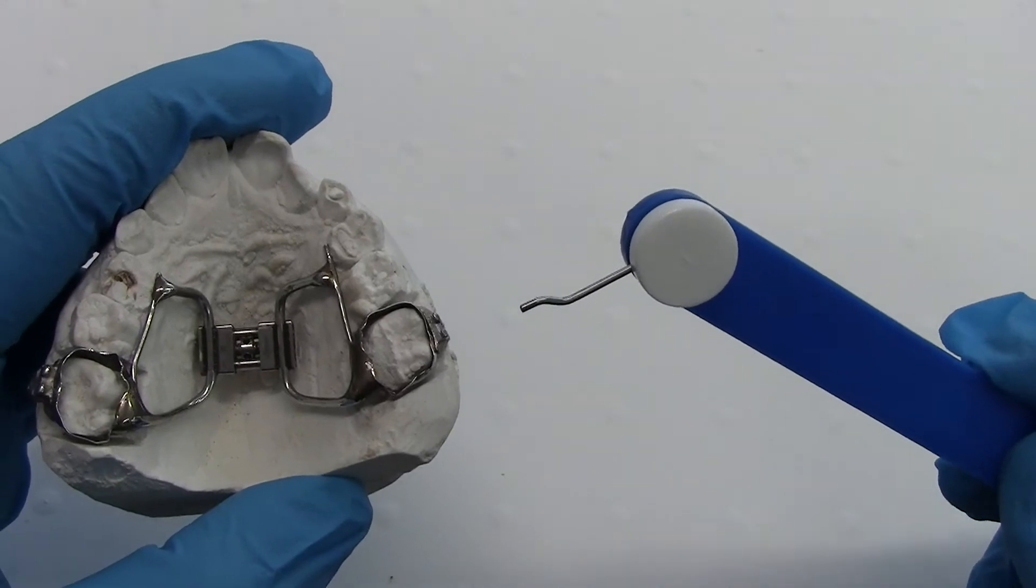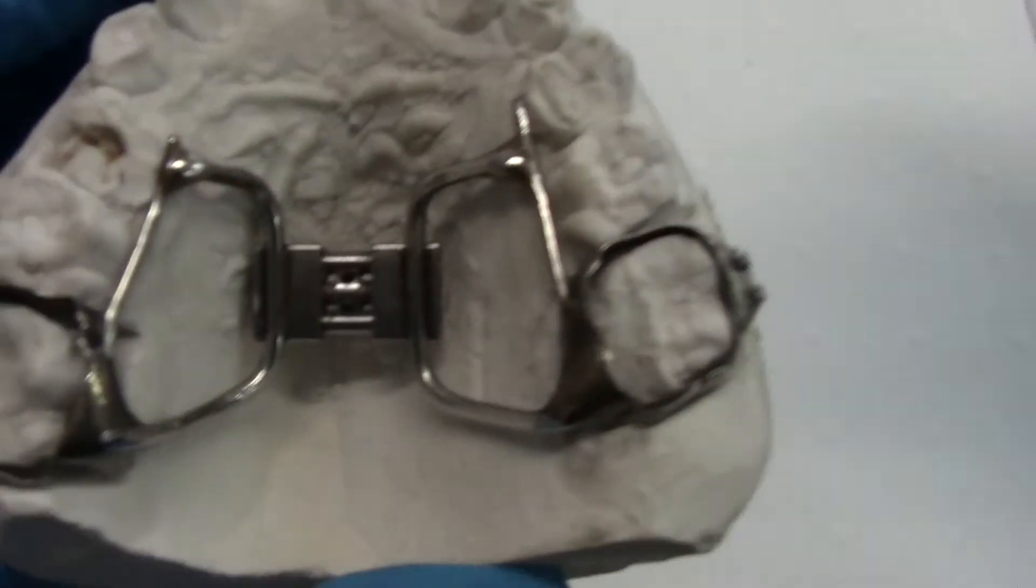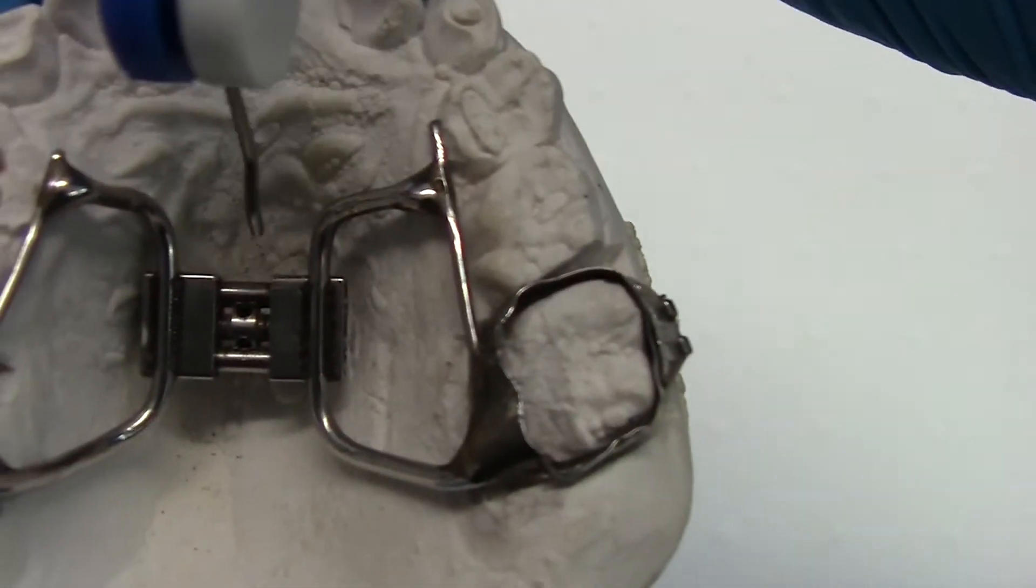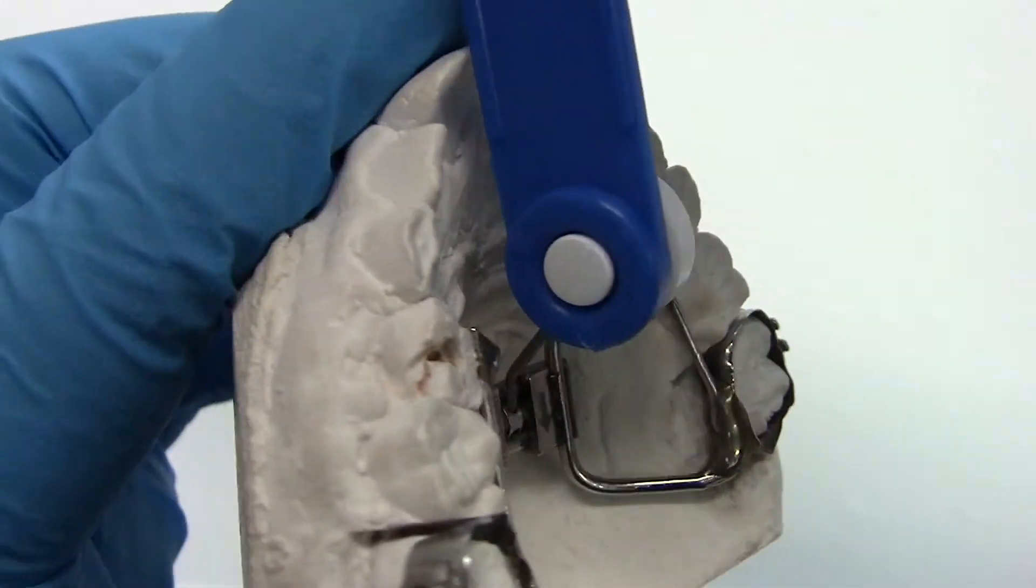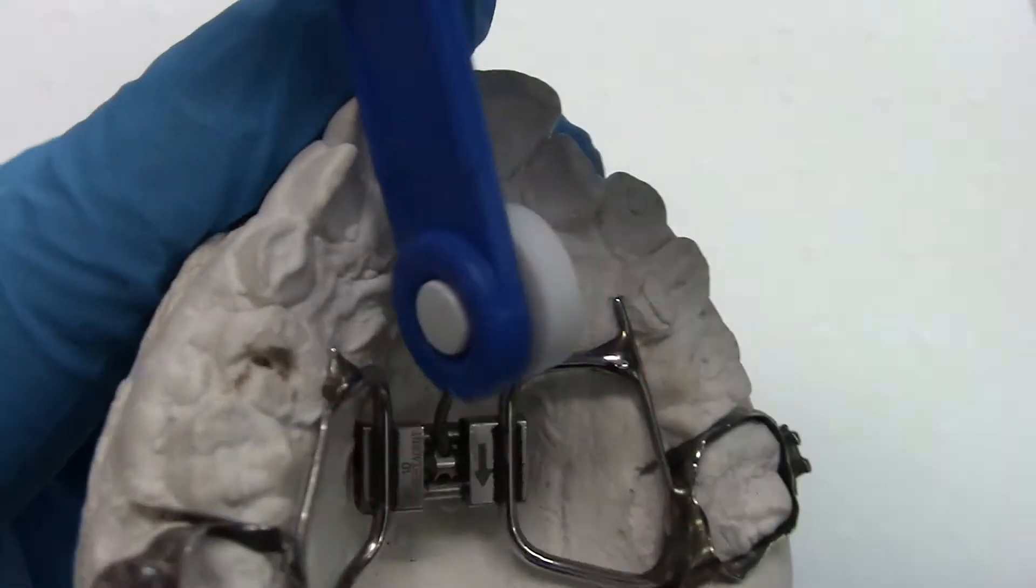Place the key in the front hole of the RME. Ensure that the handle is touching the upper front teeth.